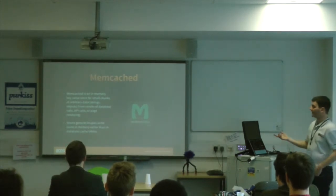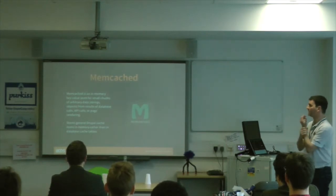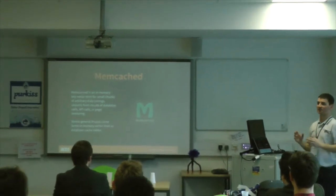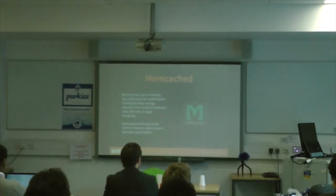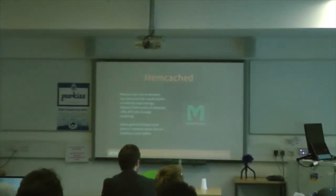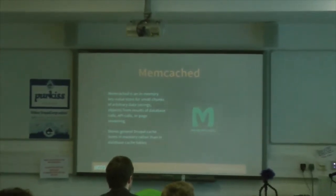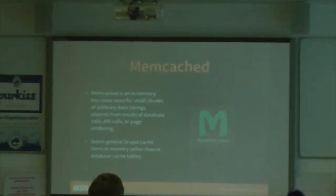Memcached — their definition is: in-memory key-value store for small chunks of arbitrary data. In Drupal terms, that means taking pieces of cached data, storing them in memory, and delivering them really fast. Just giving Memcached enough capacity in memory can make your performance 80% faster — it's just crazy the difference it makes.